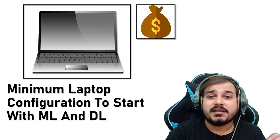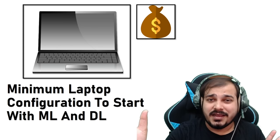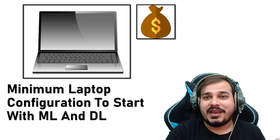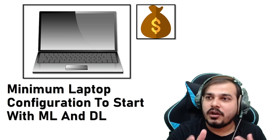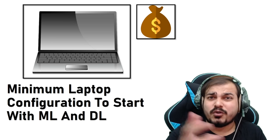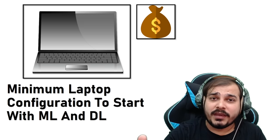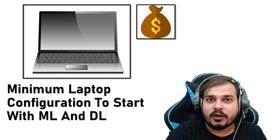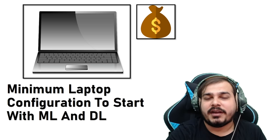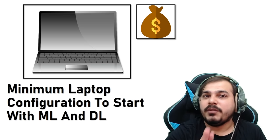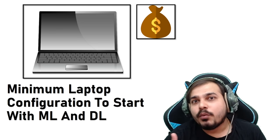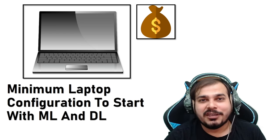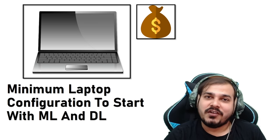An Nvidia GPU is compulsory for deep learning because you will definitely require CUDA libraries. Even if you work in Google Colab Pro, CUDA libraries are available there by default, but you should learn how to install them locally as well — because in real-world production environments that knowledge is essential. In your laptop or desktop, try to create a partition for both Windows and Linux, since most cloud platforms run Linux.